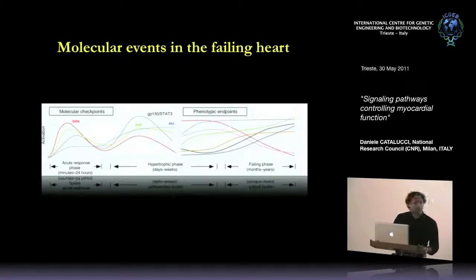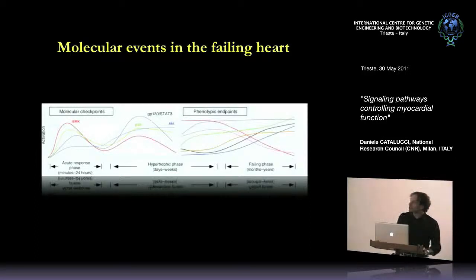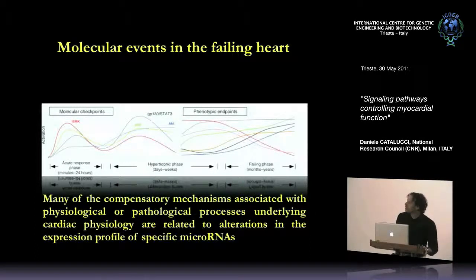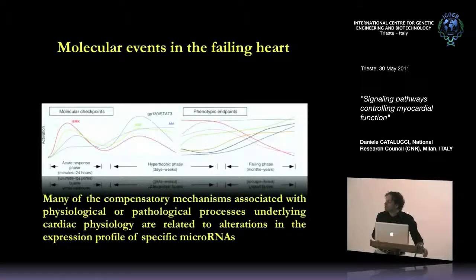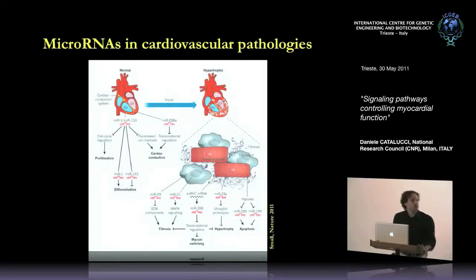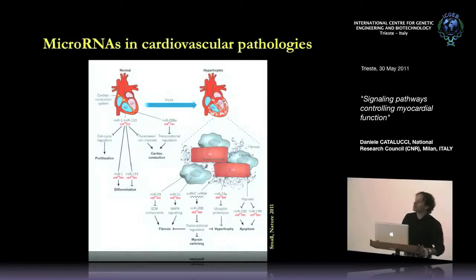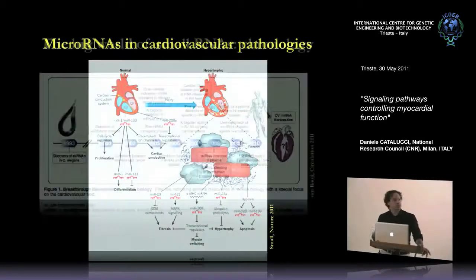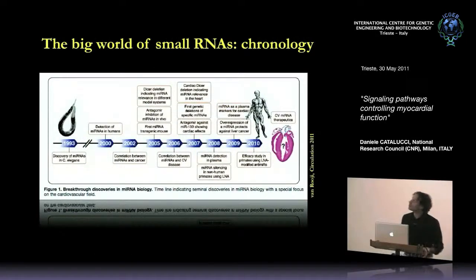This is a continuous and dynamic event where activation and deactivation of kinases changes from acute to chronic phases, leading to several events. Our lab's interest is understanding the signaling events changing along cardiac dysfunction. Many of these compensatory mechanisms have been found to be related to changes in small molecules recently discovered called microRNAs. Several microRNAs have been related to different dysfunctions in the heart, including proliferation, differentiation, cardiac conduction, and fibrosis.